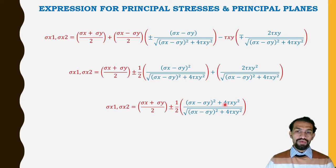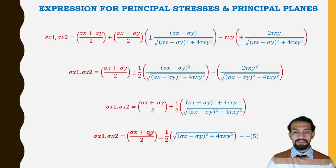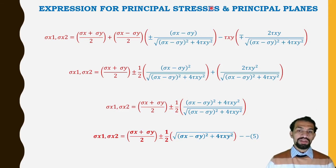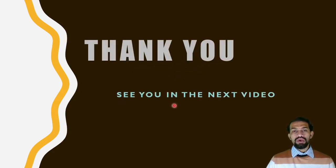The final result, Equation 5 — the expression for principal stresses — is: σ1, σ2 = (σx + σy)/2 ± √[((σx − σy)/2)² + τxy²]. This is the required expression for principal stresses. Thank you, and see you in the next video.